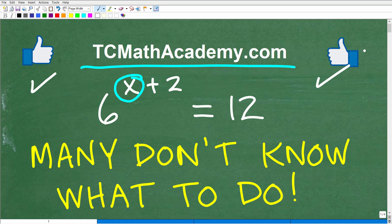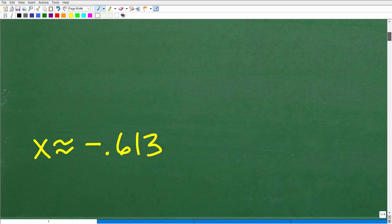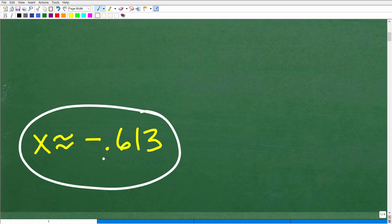Okay, so again, you will need a calculator to get an actual answer, and what I'm looking for here is what x is equal to as a decimal approximation. Let's go ahead and take a look at the answer right now. So x is approximately equal to negative 0.613.